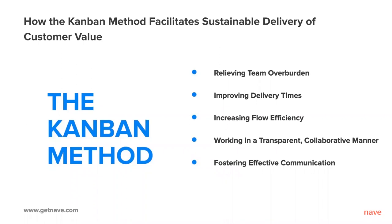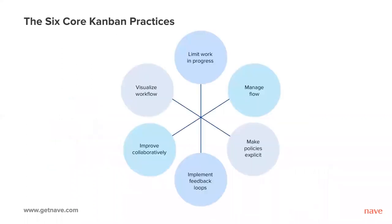Let's go to the main Kanban practices suggested by the method. There are six core Kanban practices: visualize workflow, limit work in progress, manage flow, make policies explicit, implement feedback loops, and improve collaboratively.